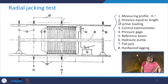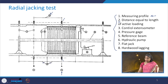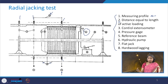The second component is the distance equal to the length of the active loading. The third is the control extensometer at designated locations. The pressure gauge is positioned through which pressure will be mobilized to the flat jacks.